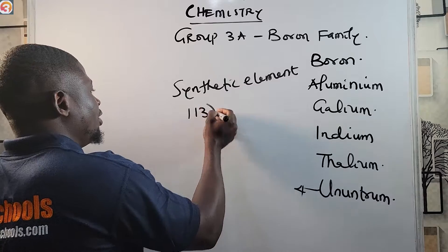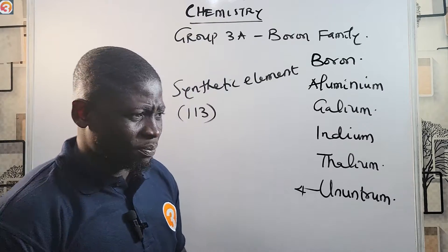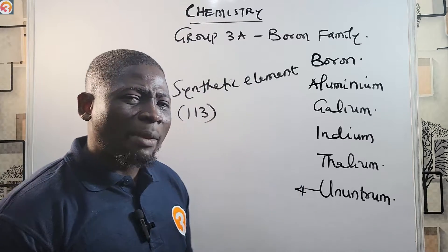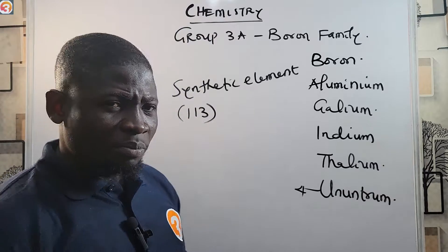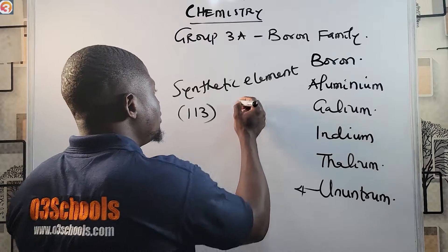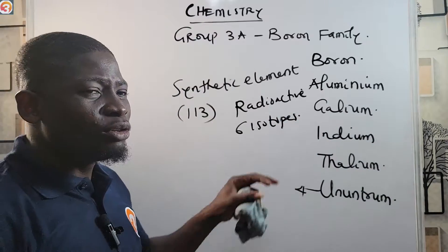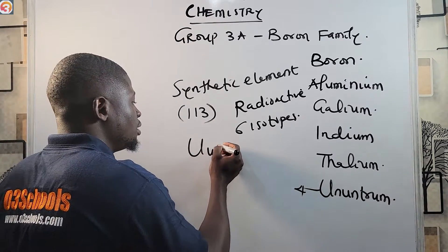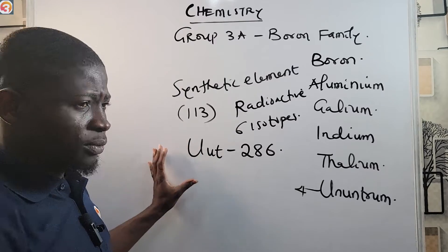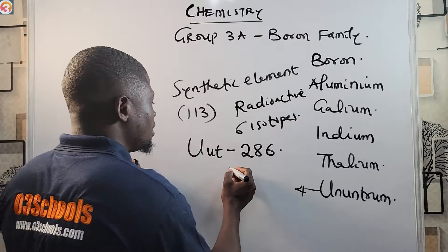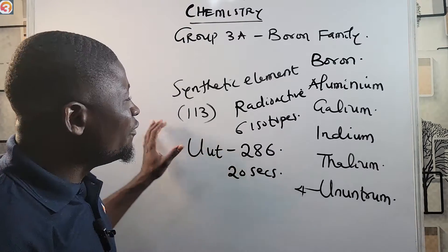Ununtrium is a synthetic element with atomic number 113, whose properties are yet to be fully known. When Dmitri Mendeleev designed his periodic table, he left some gaps — ununtrium is one of those elements whose properties are yet to be discovered. It is highly radioactive and has six isotopes. The most stable isotope is ununtrium-286 (symbol: Uut), which has a half-life of just 20 seconds — showing just how radioactive this element is.